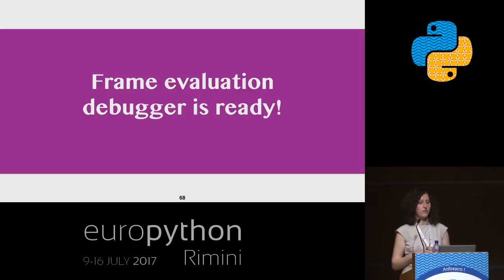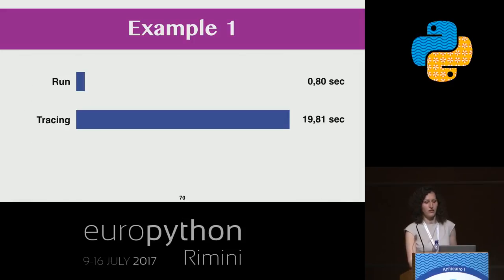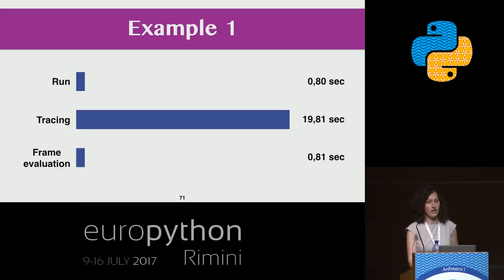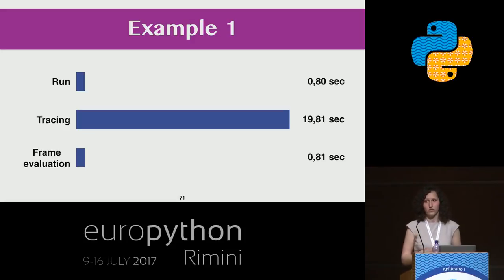Our frame evaluation debugger is ready. Remember the slow example with function 'calculate'? With the tracing debugger it became almost 25 times slower. With frame evaluation, it runs almost as fast as without a debugger. This happens because we're not calling the tracing function on every line — we just call our breakpoint function once and continue execution like without a debugger.